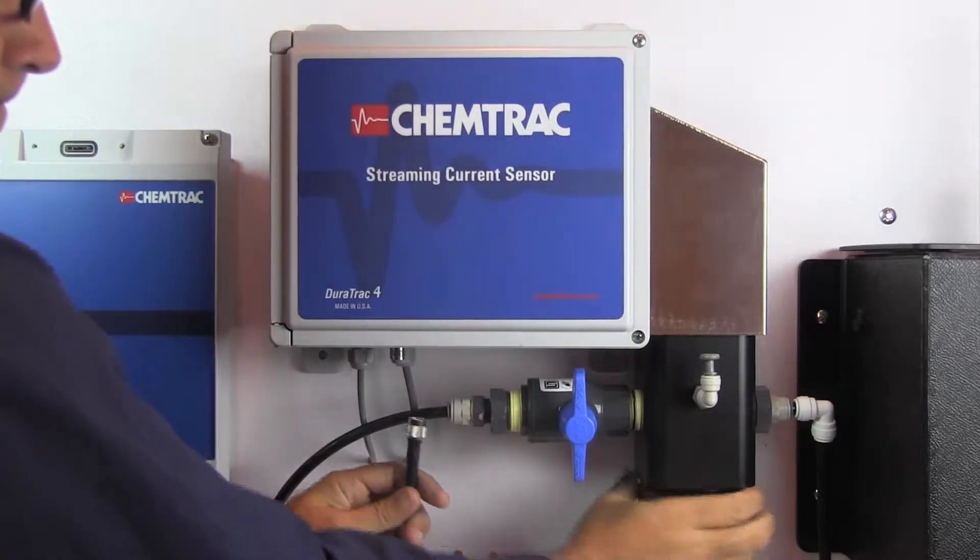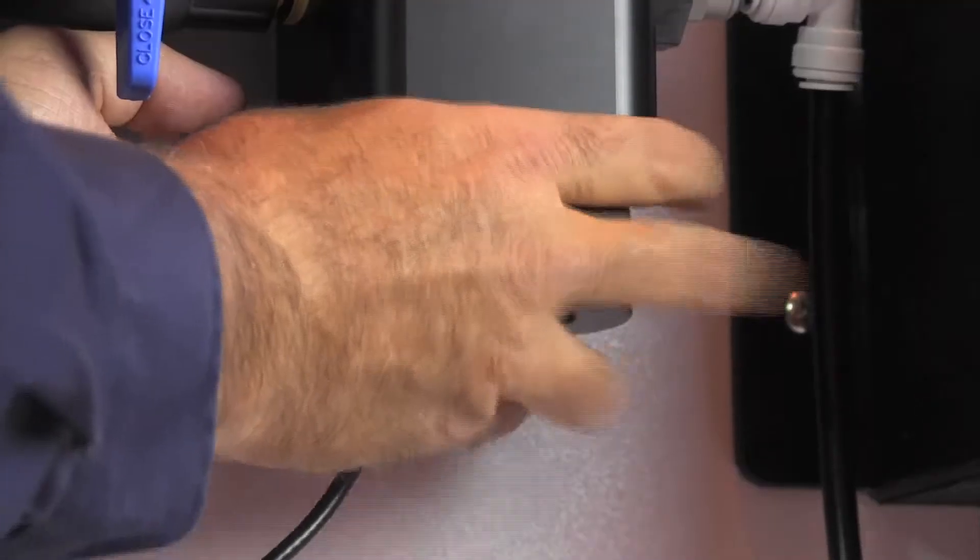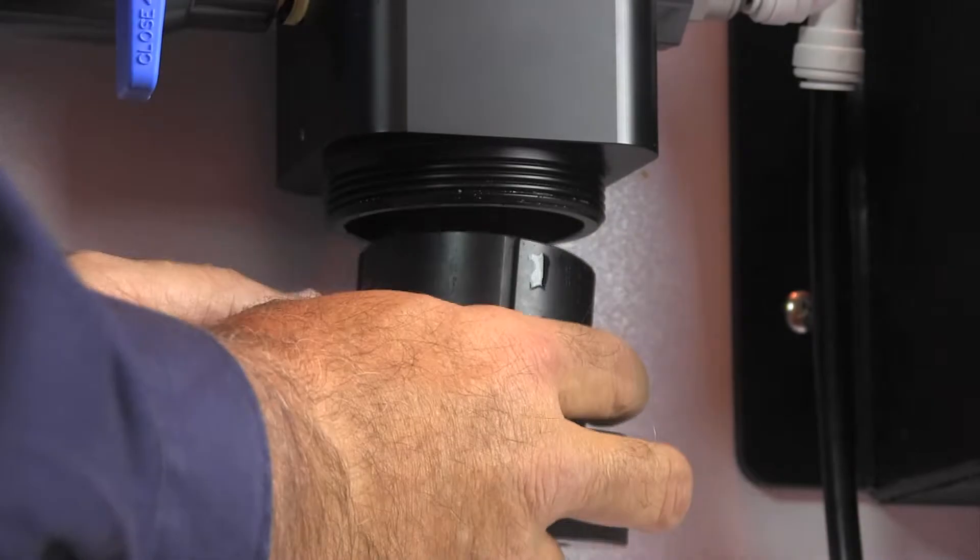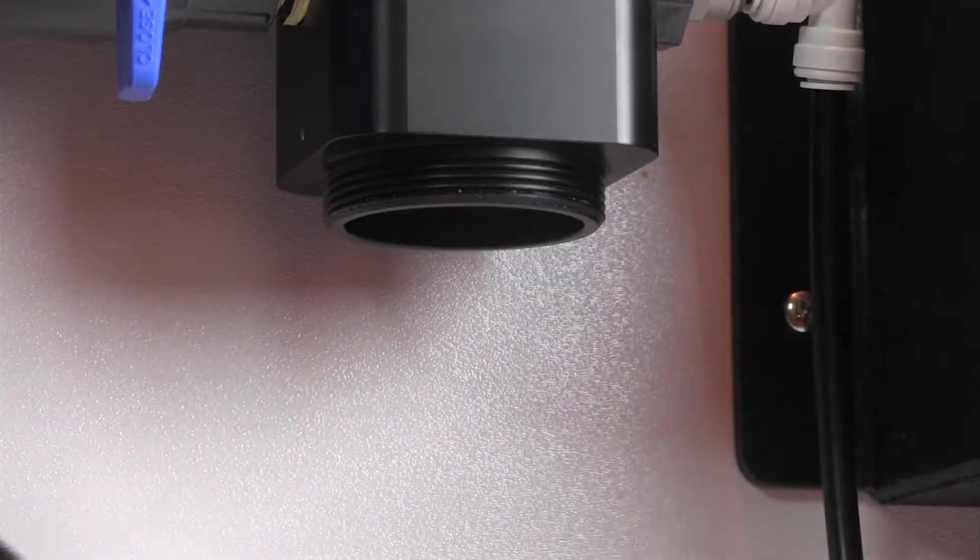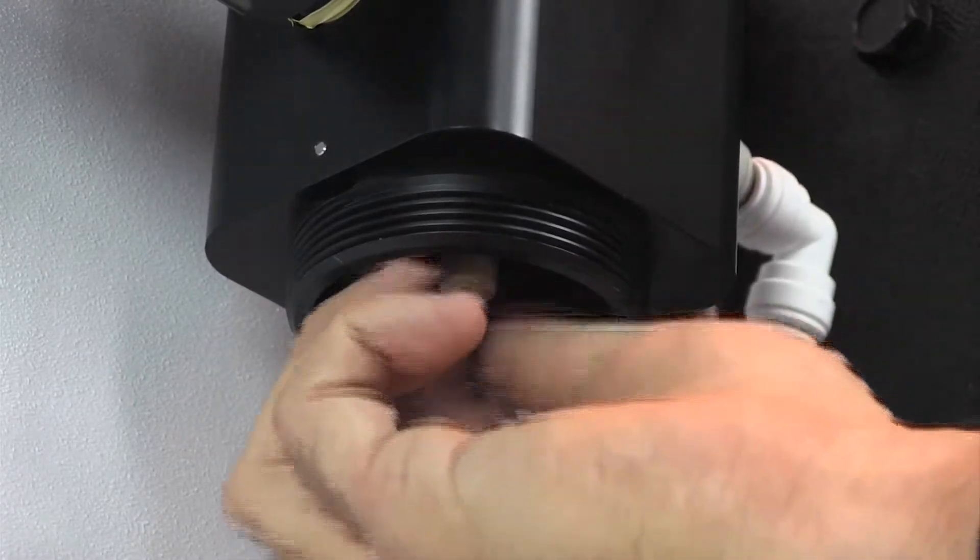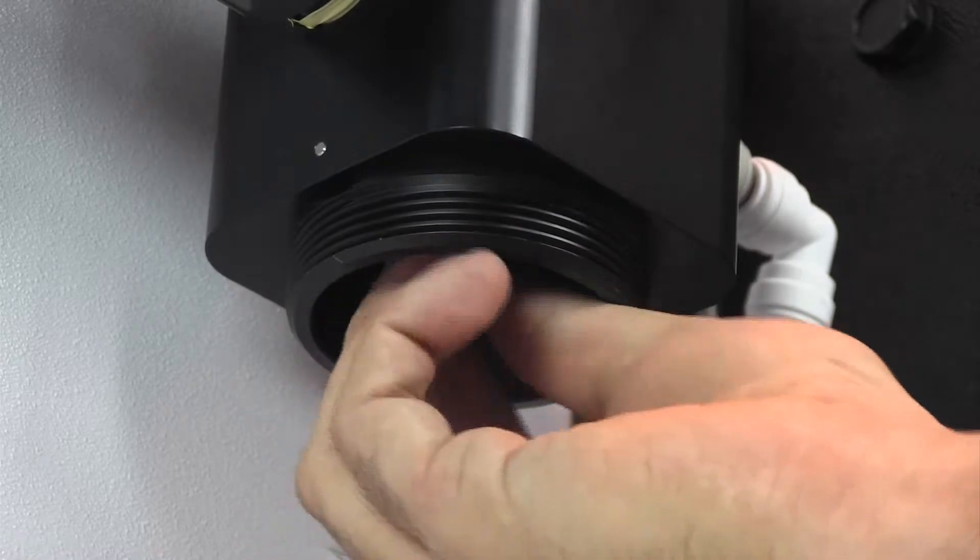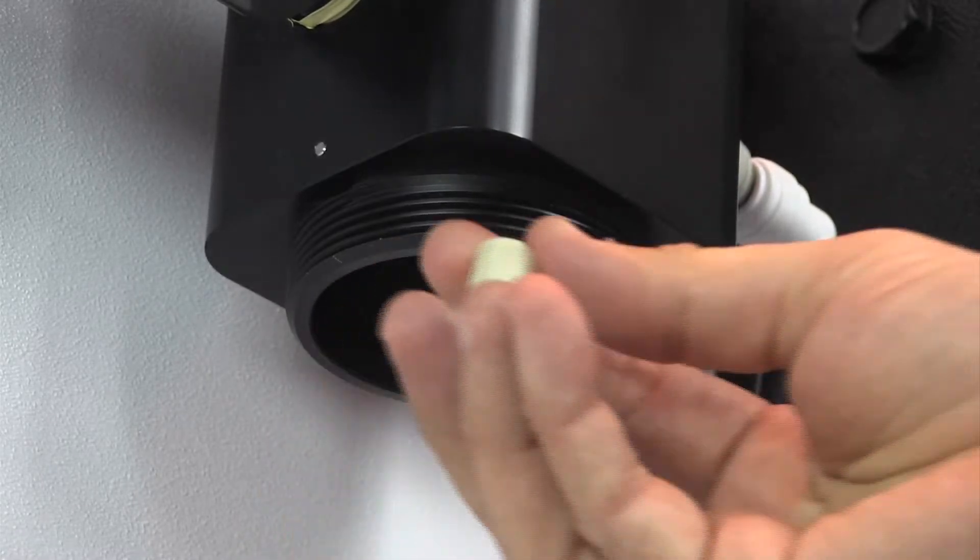Remove the sensor block probe retainer nut by hand, allowing the probe cartridge to drop out. Reach into the sensor block, unscrew the piston, and note the amount of wear on the piston.